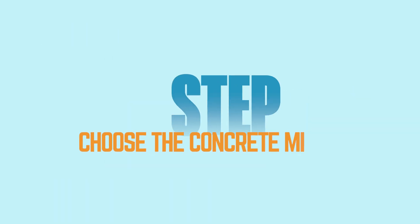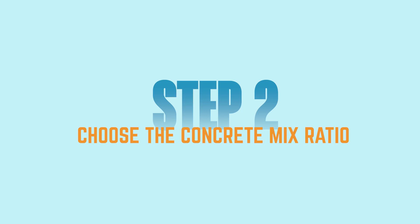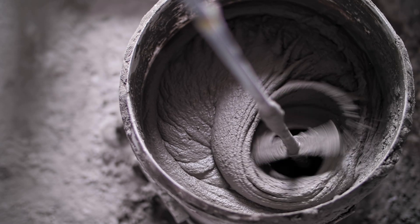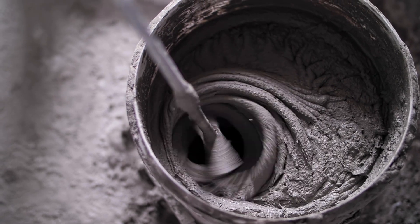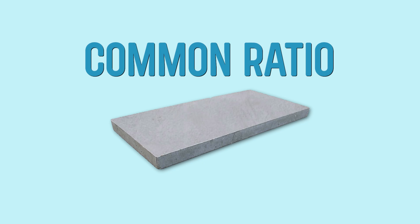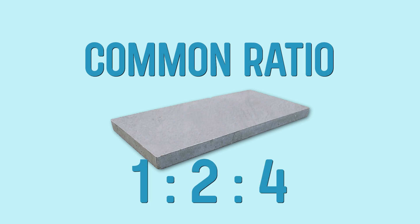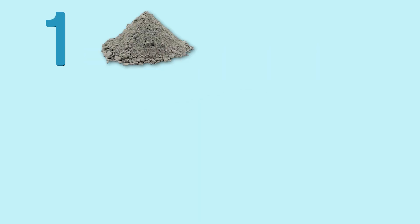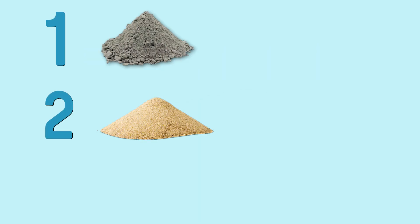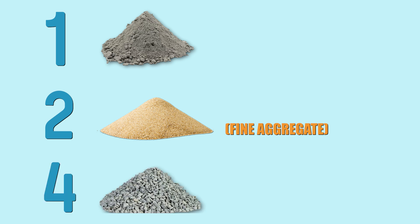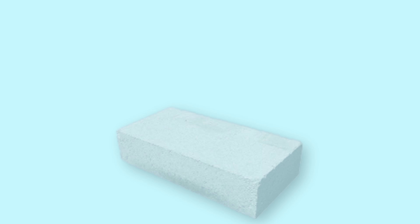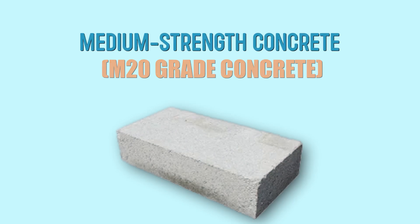Step 2: Choosing the concrete mix ratio. Concrete mix ratios vary based on the strength requirement, but for a general slab a common mix ratio is 1:2:4. This means one part cement, two parts sand (fine aggregate), and four parts gravel (coarse aggregate). This mix ratio is commonly used for medium strength concrete, such as M20 grade concrete.